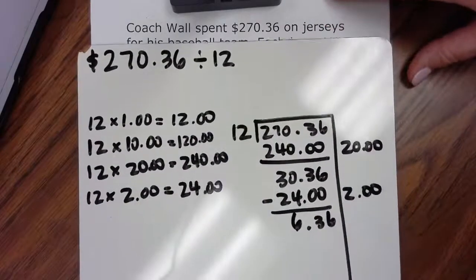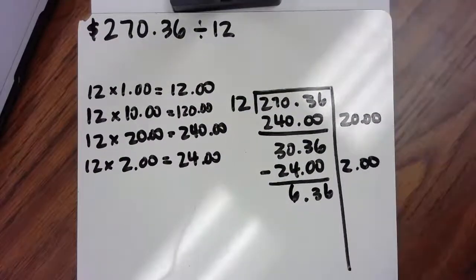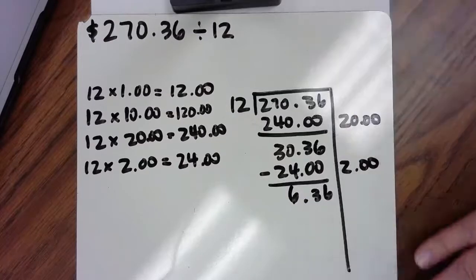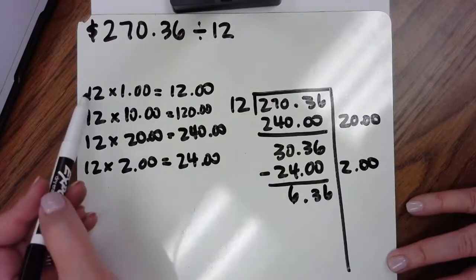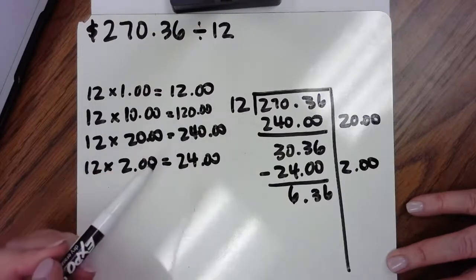I'm going to move up. Losing our word problem so we can see the division. Alright, so now I'm at $6.36 and even my $1 is too big.